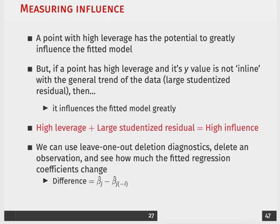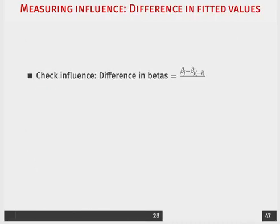We're going to talk about different ways of assessing influence. But one of the first ways is that we can use leave-one-out deletion again by deleting an observation and then seeing how much the fitted regression coefficients change. We're going to call that just a difference in betas approach. And a large change would then suggest that it has high influence.